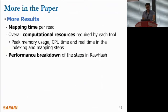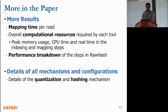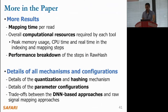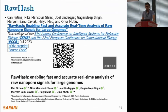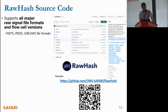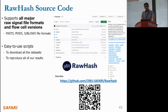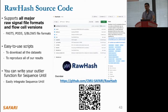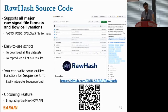You can find more results such as mapping time per read, overall computational resources required by each tool, performance breakdown of steps in RawHash, and details on all mechanism configuration details and trade-offs between DNN-based approaches and raw signal mapping in our paper. You can use the QR code to access our paper published in Bioinformatics as part of the proceedings of ISMB and ECCB. You can also use the QR code to access our source code. RawHash supports all major raw signal formats such as FAST5, POD5, SLOW5, and BLOW5, and we provide easy-to-use scripts to download all datasets and reproduce all results.